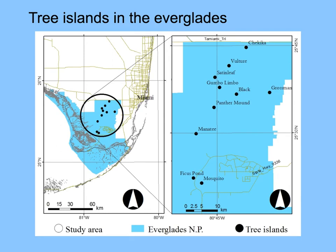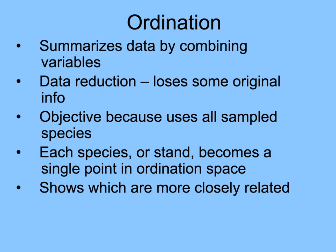Scientists at FIU have studied the vegetational diversity of tree islands in the Everglades. Each black dot represents a tree island with its name indicated. Collecting data for species presence and cover or abundance on each of those tree islands gives a good basis for comparison. They turn out to be quite different from one another, but some are more similar to others. So we can use ordination, which summarizes data by combining variables and reducing those data to a couple of axes, where each species or tree island would be a single point in the ordination space.